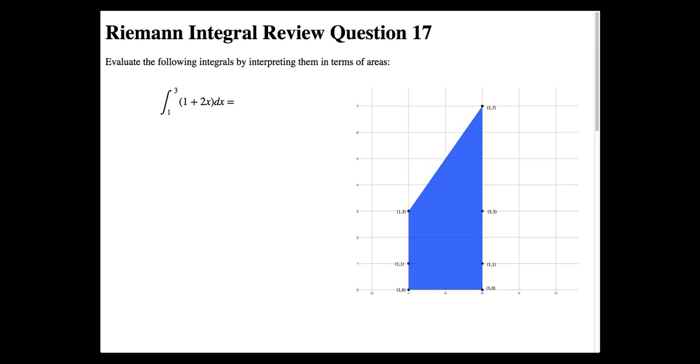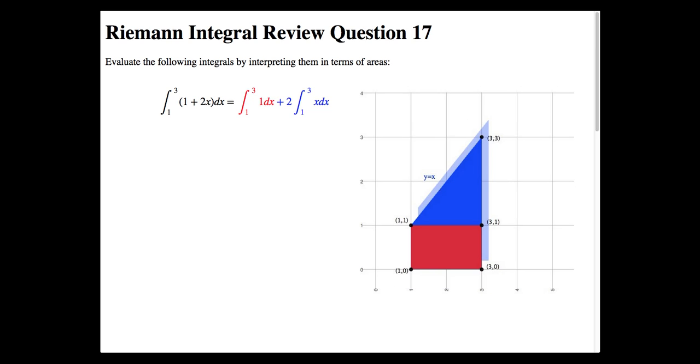Or we could solve it using the integral properties of linearity. That is, we can split the function up to two separate integrals going from 1 to 3 and adding the areas afterwards. So the first step we would need to do is calculate the integral of 1dx going from 1 to 3. Now we can see that we have a rectangle with the width of 2 and the height of 1. And the area of this rectangle would be the width times the height, which would give us an area of 2.